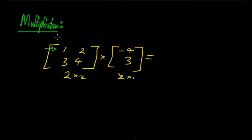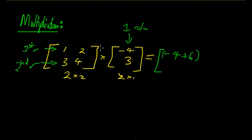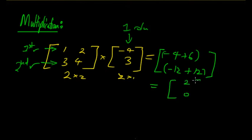Let's multiply the 2×2 matrix [1, 2; 3, 4] by the 2×1 matrix [-4; 3]. Multiplication works by taking the row of the first matrix and multiplying it by the column of the second. The first row times the first column gives: 1×(-4) + 2×3 = -4 + 6 = 2. The second row times the first column gives: 3×(-4) + 4×3 = -12 + 12 = 0. So the result is [2; 0].